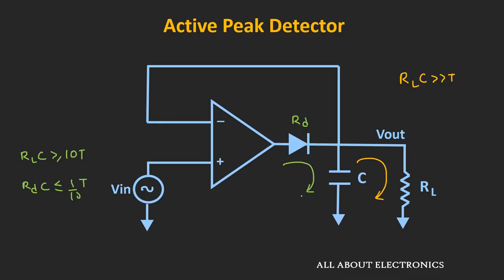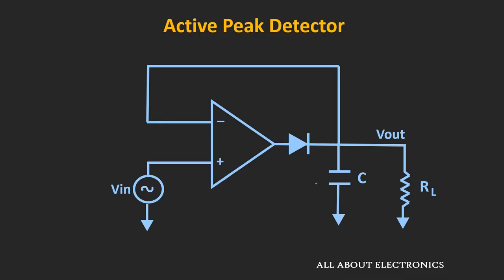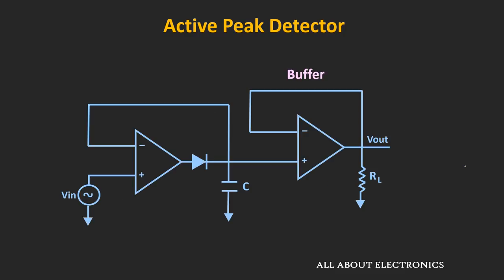By following these conditions, the discharging of the capacitor can be reduced. But many times it is not possible to control the load resistance, particularly whenever the output of the circuit is given to some other circuit, because at that time the input impedance of the other circuit is not known.